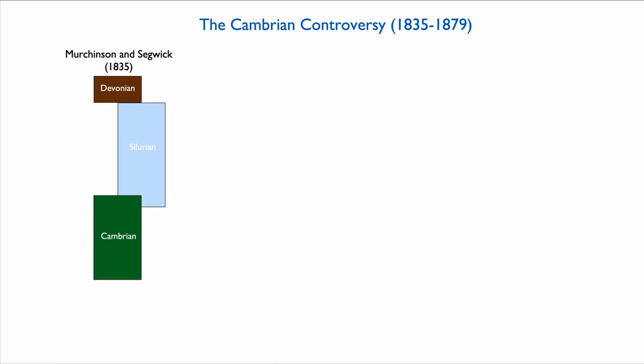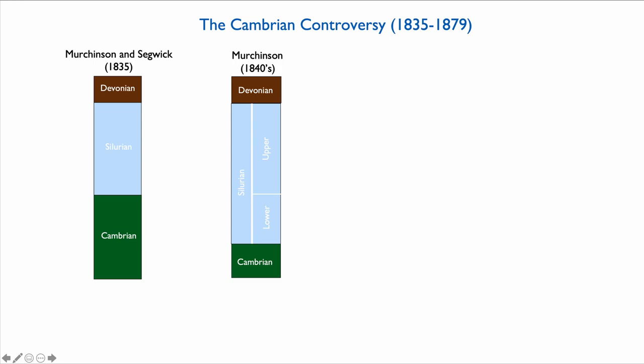It became apparent that the Silurian and the Cambrian somewhat overlapped — the base of the Silurian overlapped with the top of the Cambrian — and that needed to be resolved. Murchison was the first to try. His solution was simple: he basically defined the Silurian as comprising the top of the Cambrian, extending the Silurian downward and dividing it into lower and upper Silurian, making the Cambrian that much shorter.